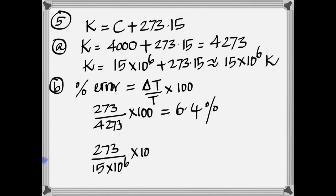But in the second one, of course, it's going to be much smaller, because the number here is much bigger. So you get 1.82 times 10 to the negative 3 percent.